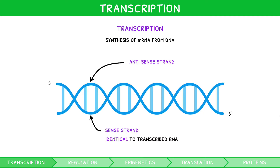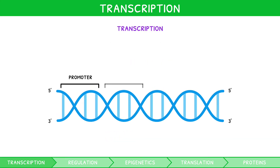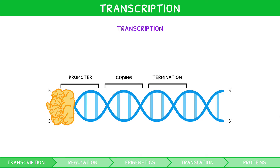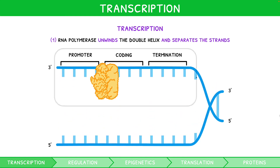The antisense strand runs in a 3' to 5' direction, and is the strand that will be complementary to the transcribed RNA. The DNA strand can be considered in three sections: the promoter region, coding region, and terminator region. At the promoter region, RNA polymerase binds to the antisense strand, unwinds the double helix, and separates the strands, forming a transcription bubble.